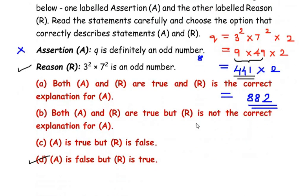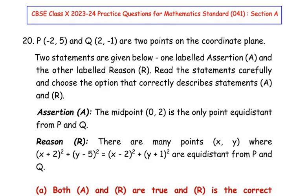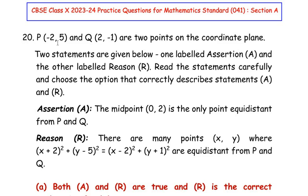Now let us move on to the 20th question. This also belongs to the Assertion and Reasoning type and is from the Coordinate Geometry chapter. Points P(−2, 5) and Q(2, −1) are two points on the coordinate plane. The Assertion states: the midpoint (0, 2) is the only point equidistant from P and Q.